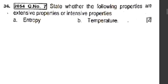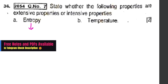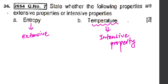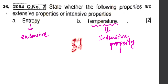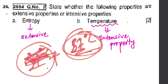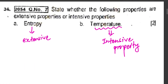In this short question, if you think about whether the following properties are extensive or intensive — for example, entropy depends on the intensive property. Temperature is intensive: your body temperature is 37 degrees Celsius. Whether your body is small or large, you won't have 34 degrees Celsius — you should know the same temperature regardless of the amount.